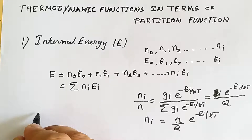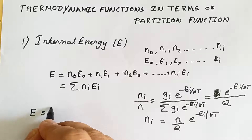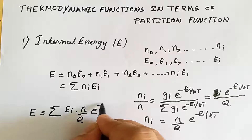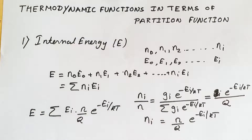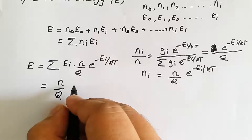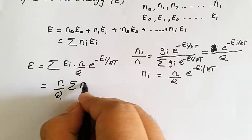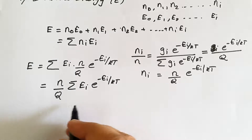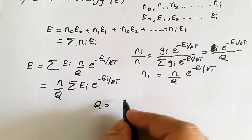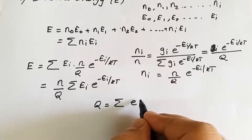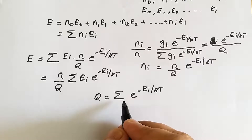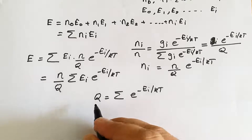Substituting this value of nᵢ into the total energy expression, we get: E = Σeᵢ·(N/Q)·e^(−eᵢ/kT). Since N and Q are constants, we can take them outside: E = (N/Q)·Σeᵢ·e^(−eᵢ/kT). We also know the partition function Q = Σe^(−eᵢ/kT), where degeneracy gᵢ = 1.